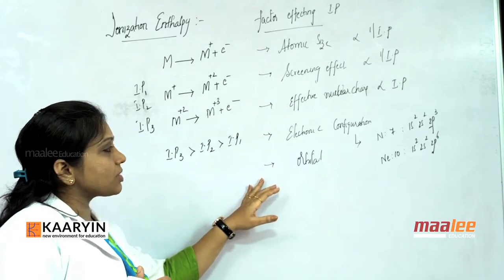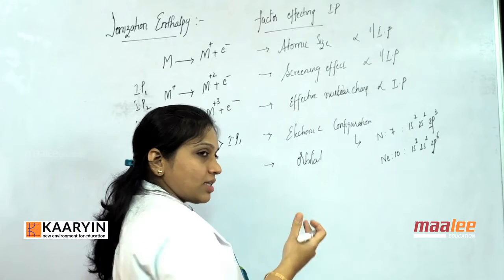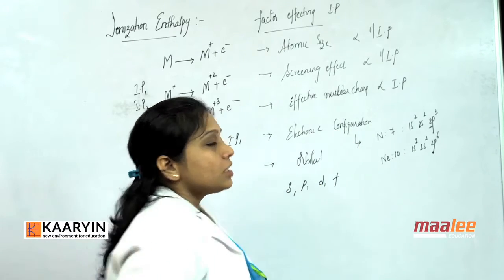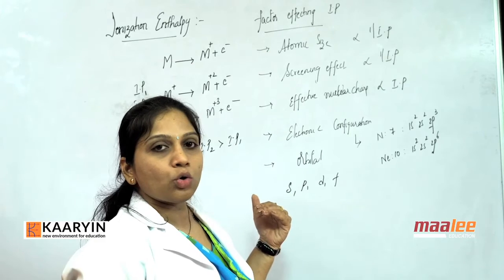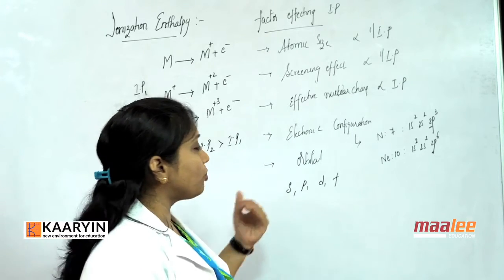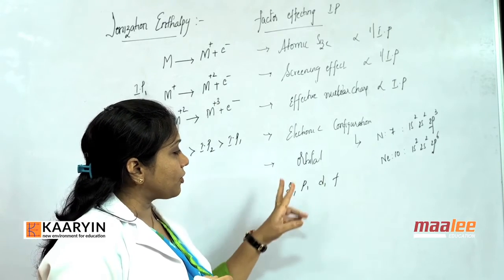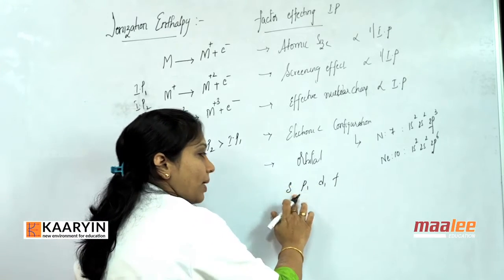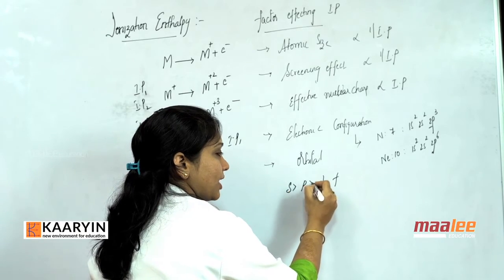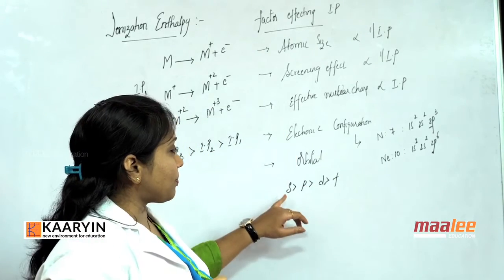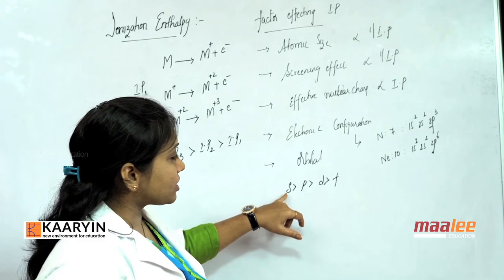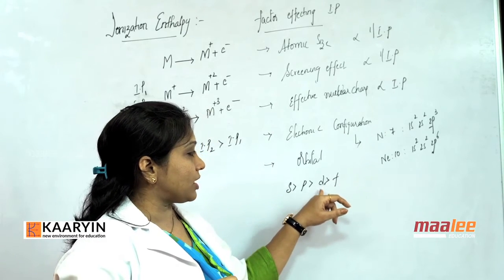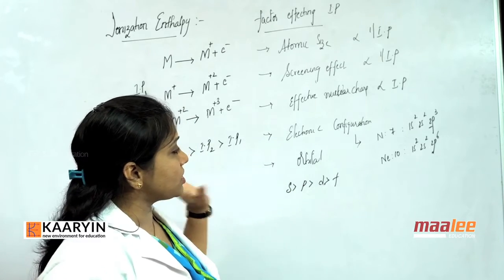The fifth factor concerns which orbital the electrons occupy. Among orbitals in the same shell — S, P, D, F — the orbital that penetrates more towards the nucleus makes it more difficult to remove electrons. S penetrates the most towards the nucleus compared to P, D, and F. So the IP order is S > P > D > F. It is most difficult to remove an electron from an S orbital and easiest from an F orbital.